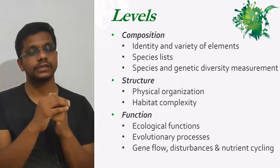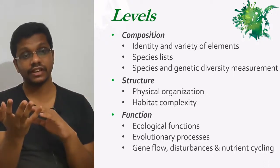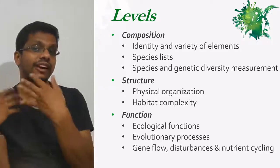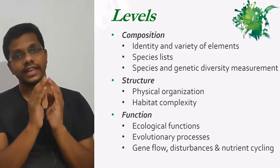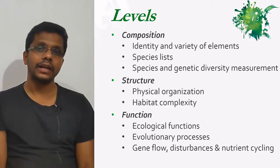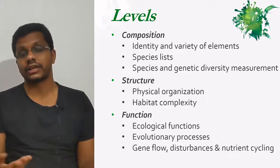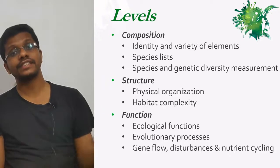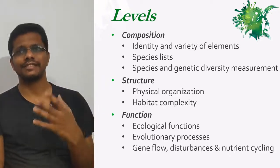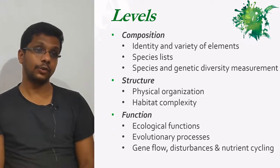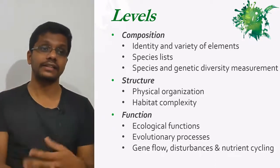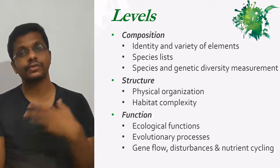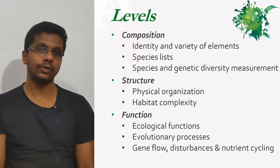We can also study the biodiversity at the function level — the ecological functions or the evolutionary process: gene flow, disturbances, nutrient cycling. Those are the functions of biodiversity. For a perfect monitoring of a system, we should study the composition, structure, and function of biodiversity, which is actually a bit difficult in a huge geographical area or on a global scale. So what we do is get indicators for all these levels so that we will get a better idea about the overall picture.